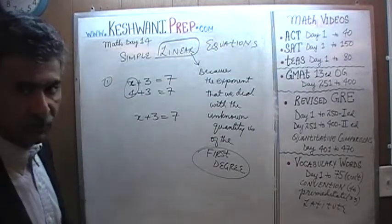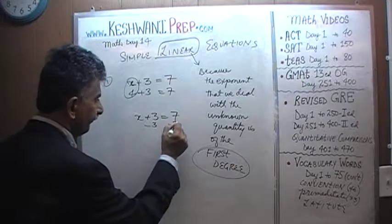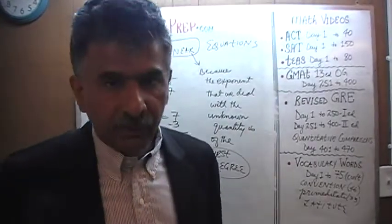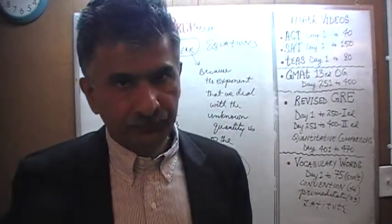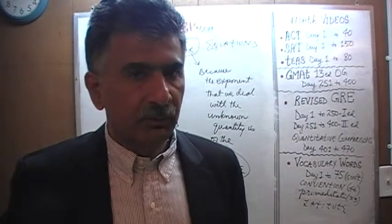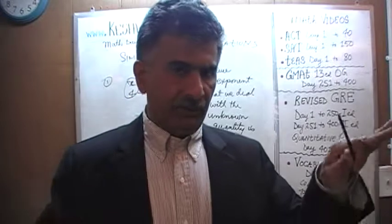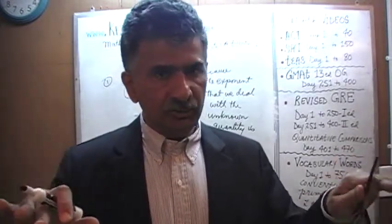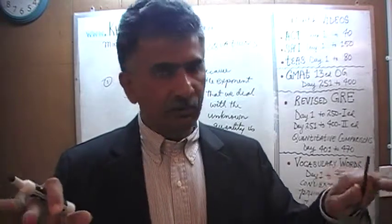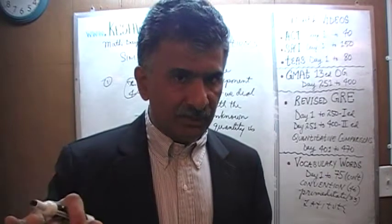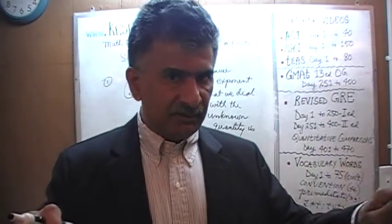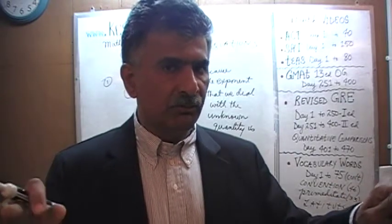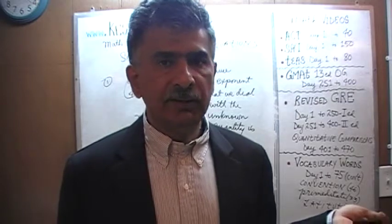The question is: how do we bring the 3 to the other side? We subtract 3 from both sides of the equation. An equation is like a seesaw — it is a balance. As long as you do the same thing to both sides of the equation, you are not disturbing the balance. So if I subtract 3 from the right-hand side and subtract 3 from the left-hand side, the equation is still valid.